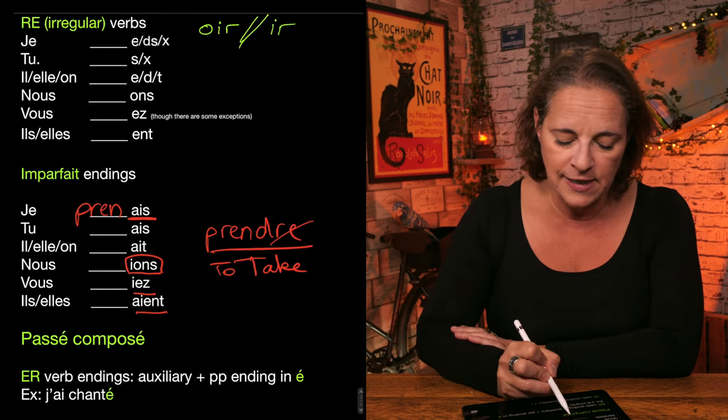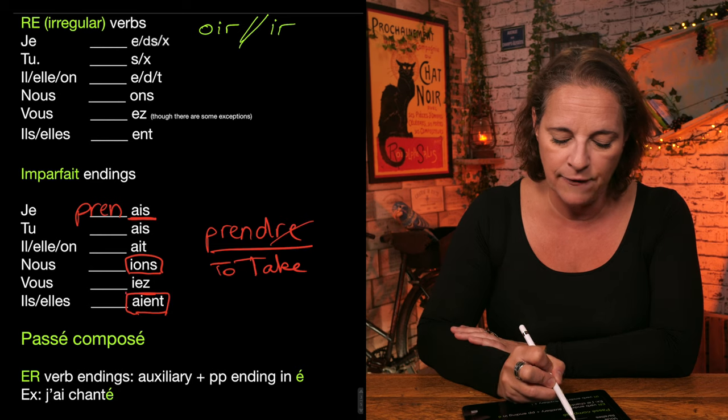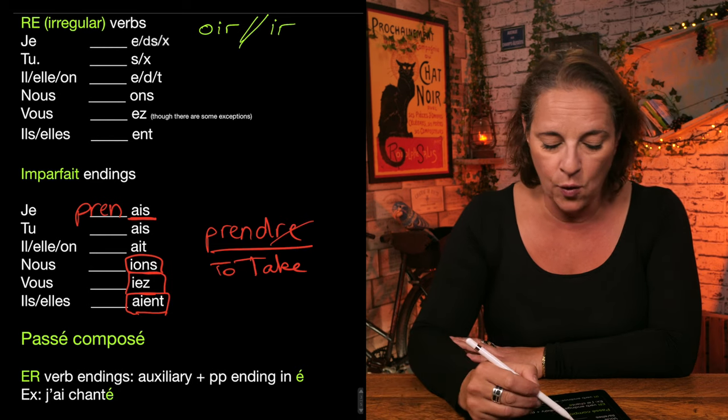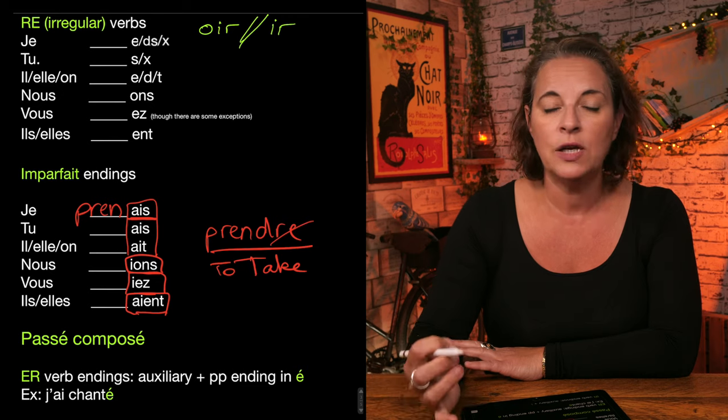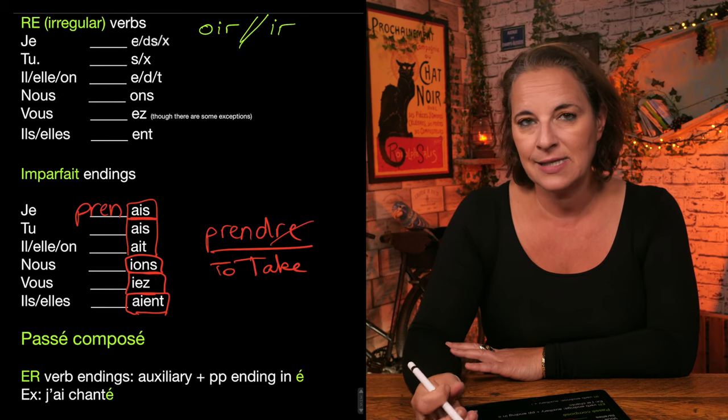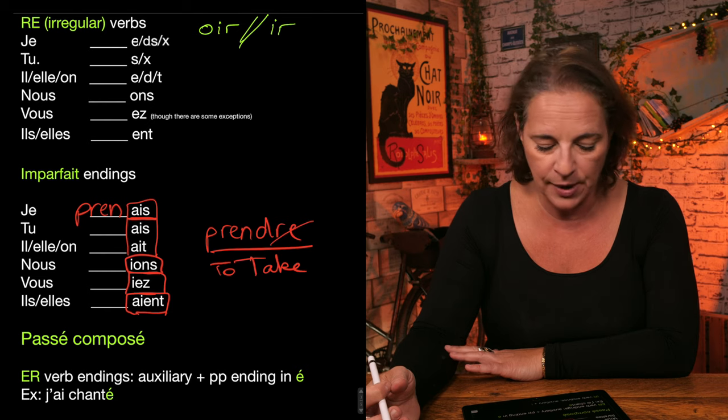So if you spot I, O, N, S, if you spot A, I, E, N, T, if you spot I, E, Z, O, N, E of these, you will know that the verb is set in the imparfait.